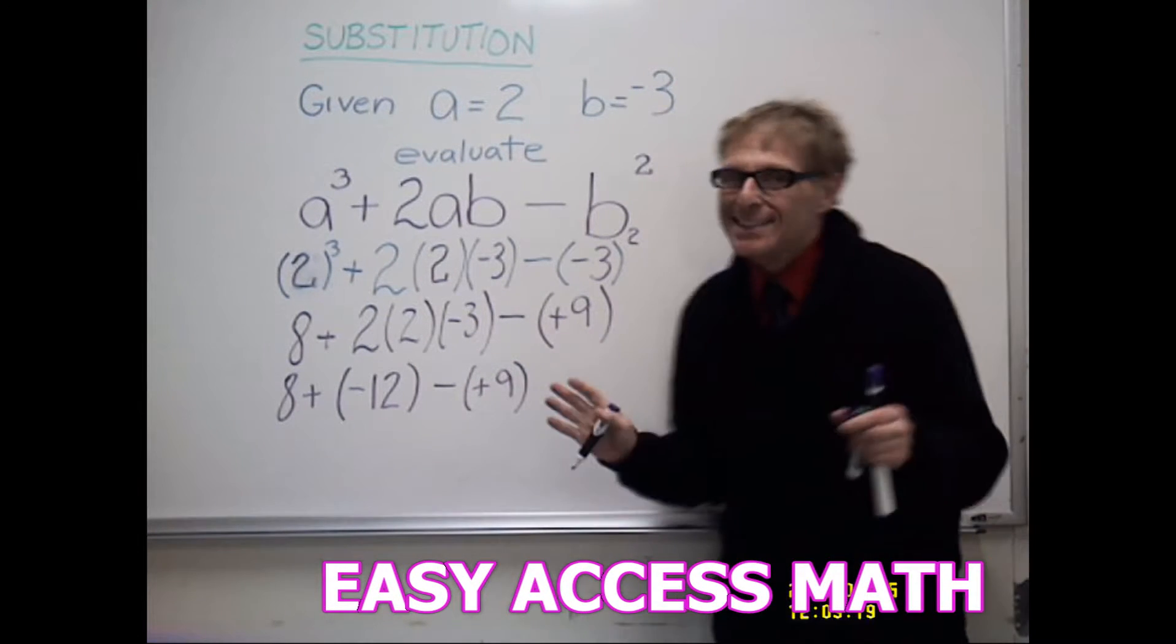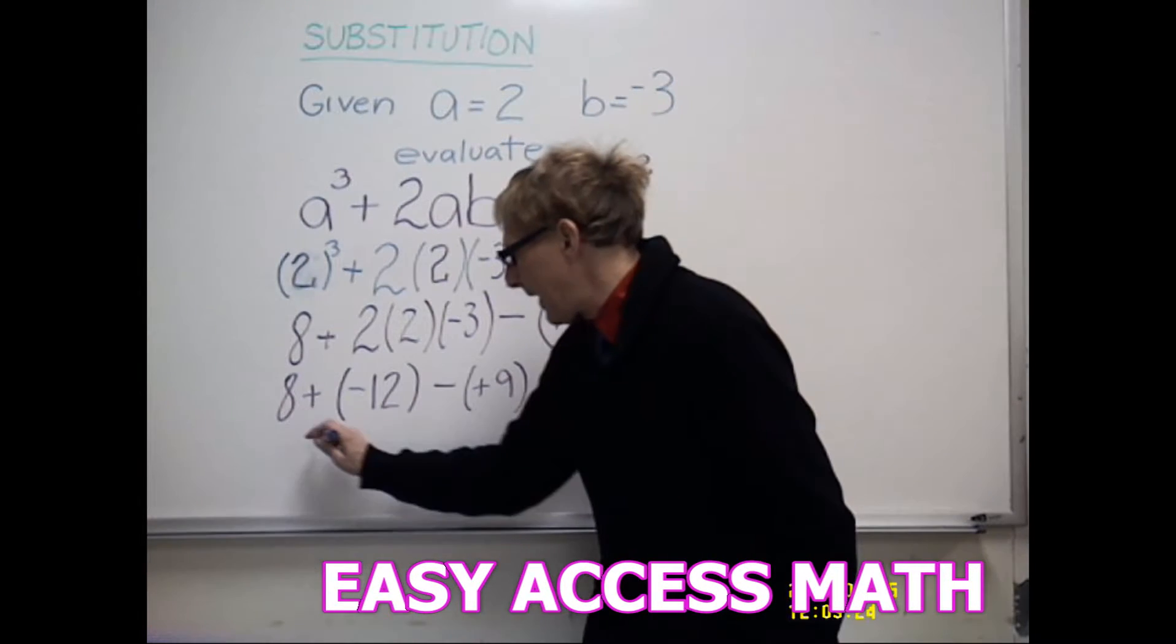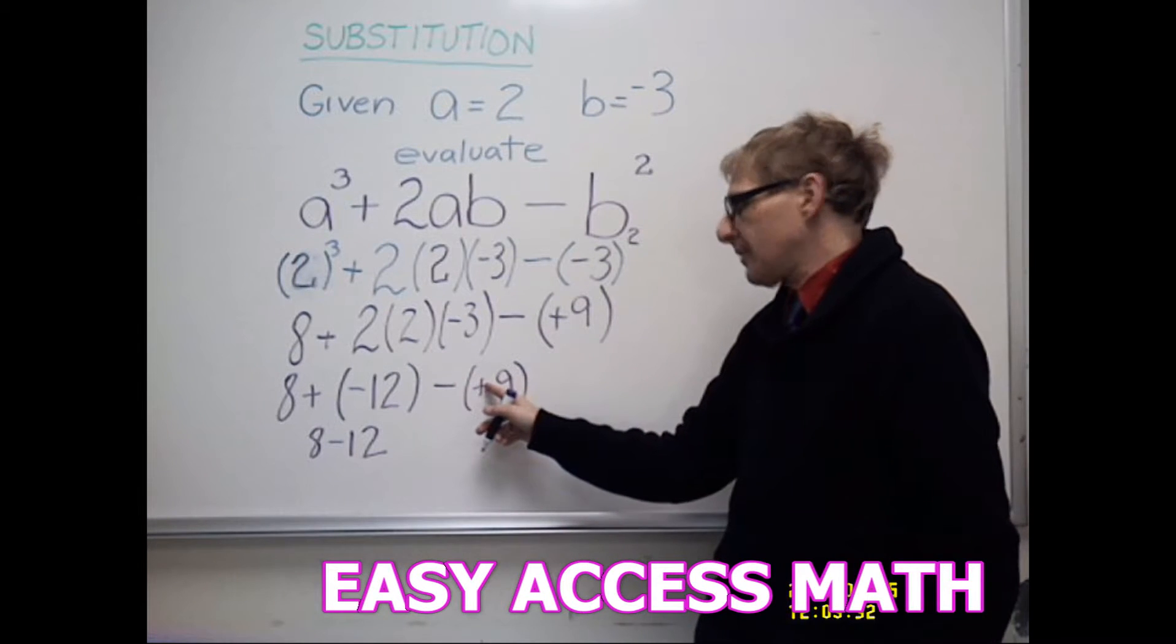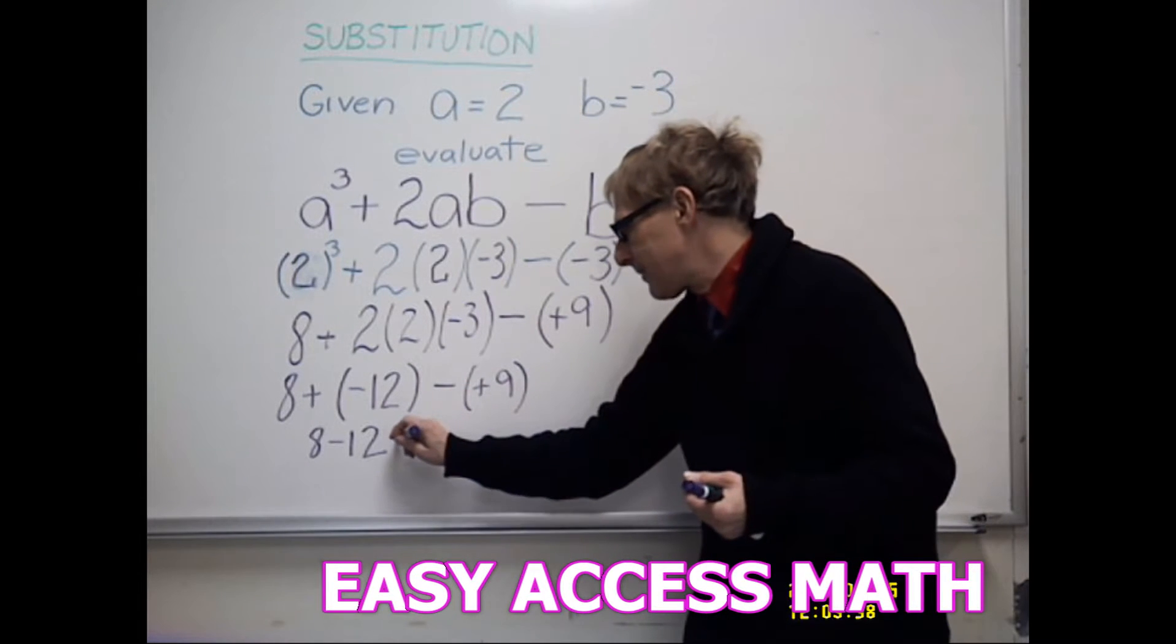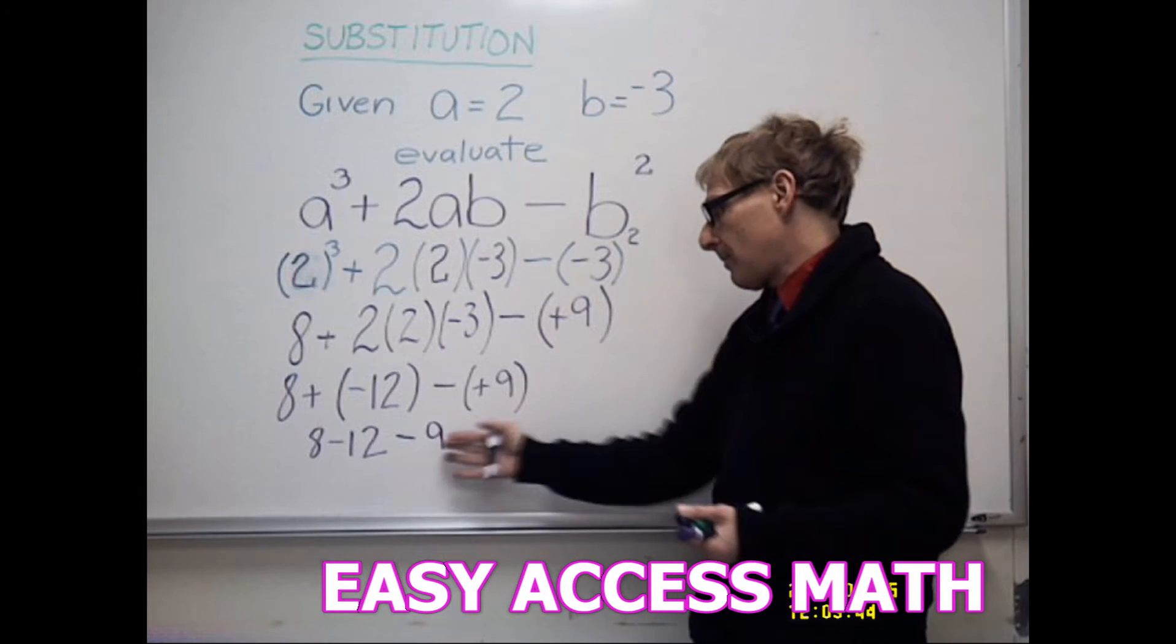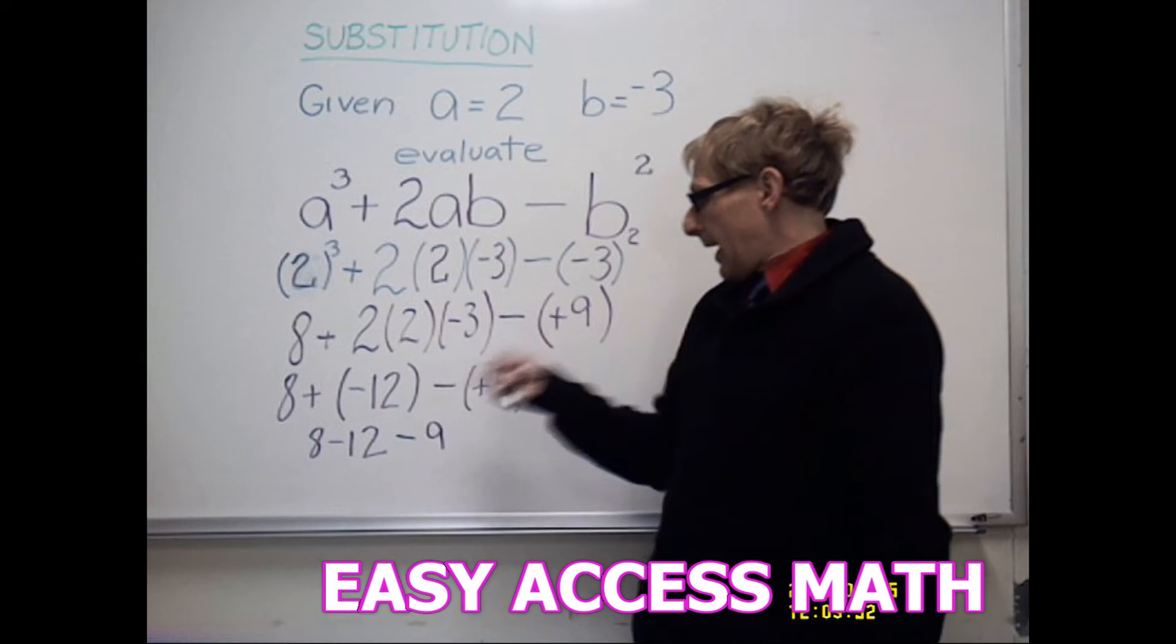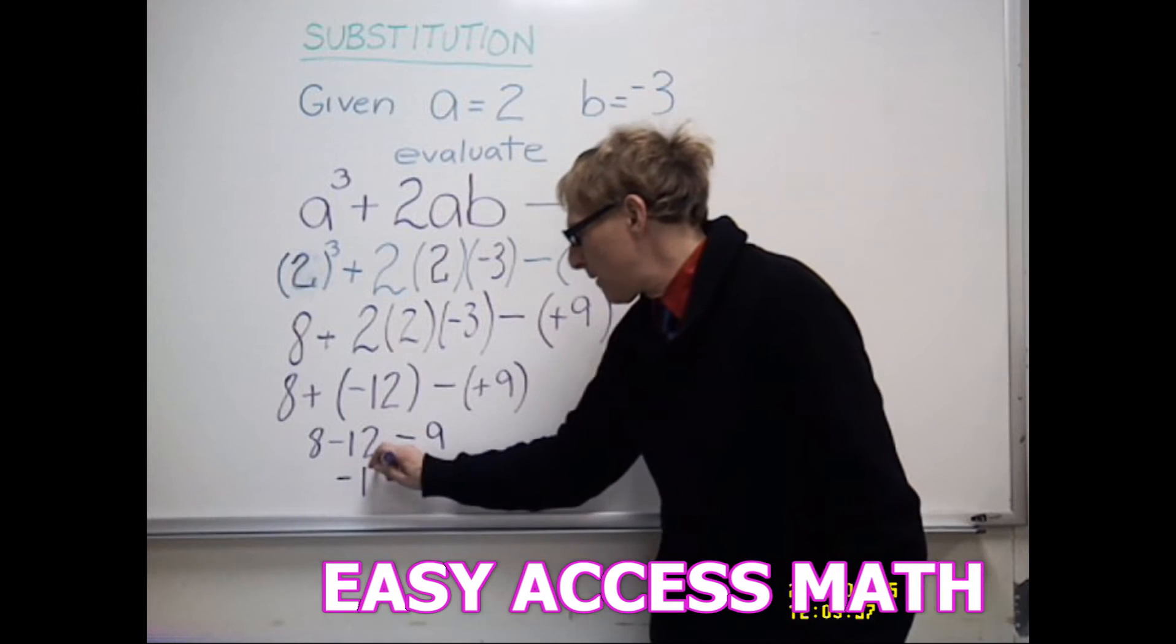And so right now I'm really just left with addition and subtraction. I could simplify this as 8 minus, because I have a plus and a minus, 12. And again, unlike signs, a minus plus. You could do keep change change, but no matter how you look at it, this ends up being a minus. You could think of it as minus 1 times positive 9. It's a minus 9. So I have 8 minus 12 minus 9. I go from left to right at this point. 8 minus 12 is a negative 4. Minus 9 more is negative 13.